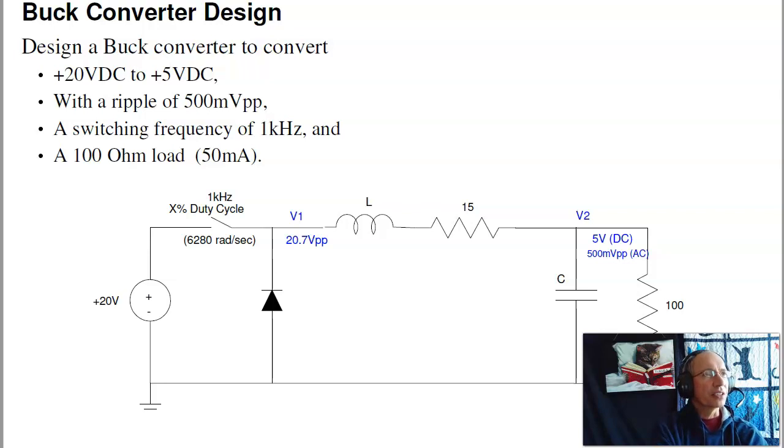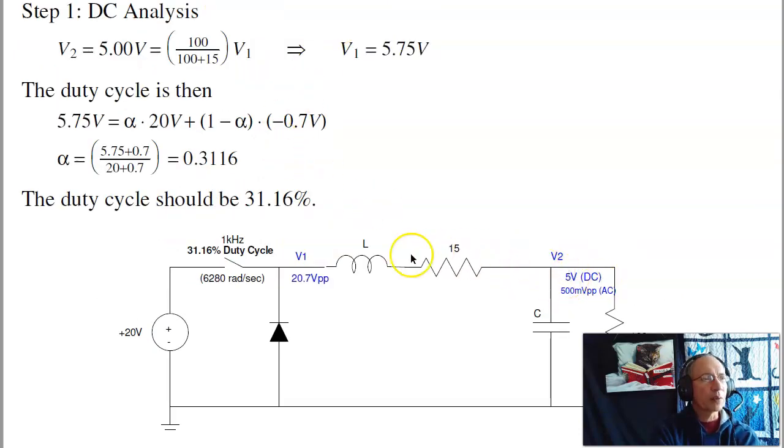Next, that's analysis. Let's do design. Suppose I want to build a buck converter that converts 20 volts down to 5 volts, with a ripple of 0.5 volts at the load, and a frequency of 1 kHz. The first step is to find the DC analysis. What's the DC voltage at V1, and what should the duty cycle be? If V2 is 5 volts, at DC, L doesn't matter, C doesn't matter, by voltage division, V2 is the percentage of V1. To make V2 equal to 5 volts, V1 has to be 5.75 volts. To get the duty cycle, then, 5.75 is the average of 20 and minus 0.7, alpha is the duty cycle. That works out to a duty cycle of 31%, so I want this to be 31% on. That'll set the DC voltage.